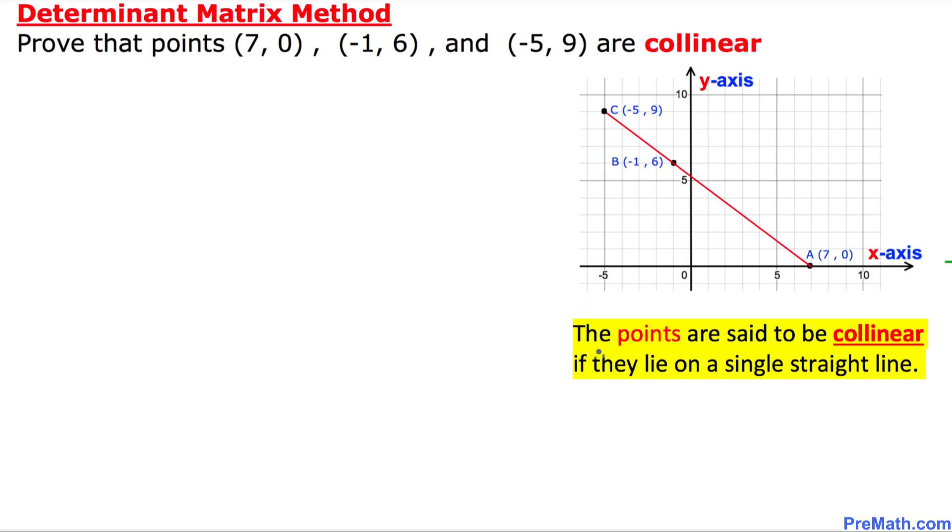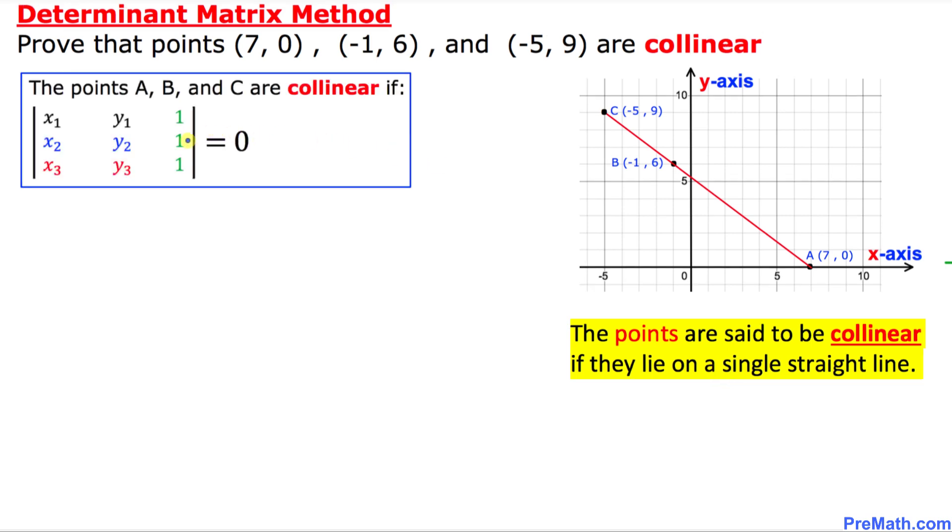And once again, the points are said to be collinear if they lie on a single straight line. To prove this, we will be using this fact.